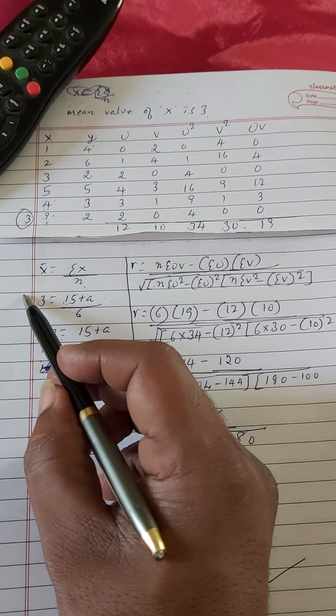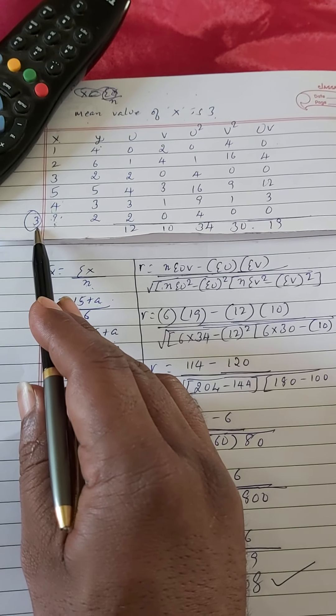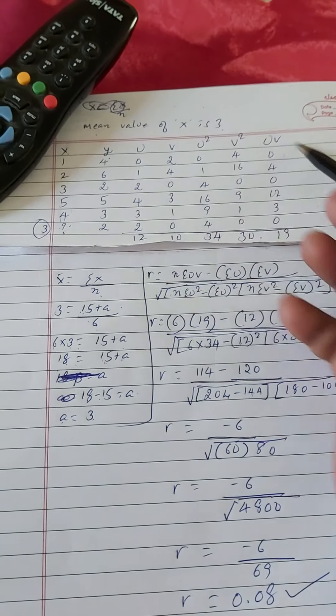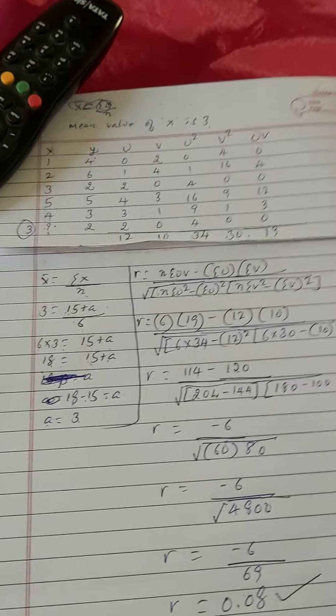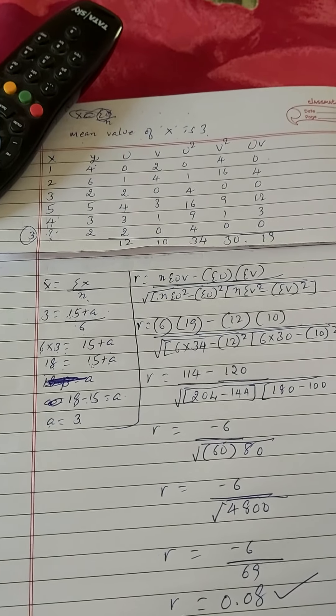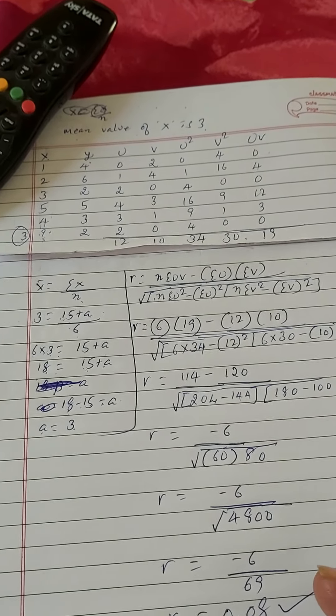Already has given the value of x̄ is 3. So x̄, instead of writing x̄, I am writing 3. 3 is equal to, that means x̄ is equal to sum of x, 15 plus a, that should be divided by 6.